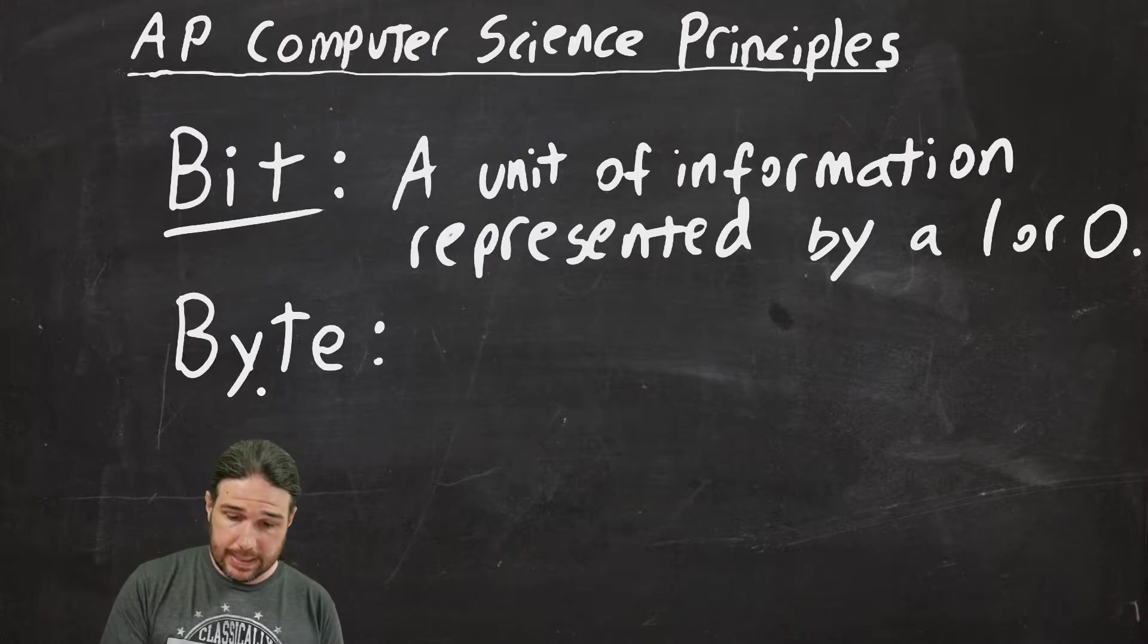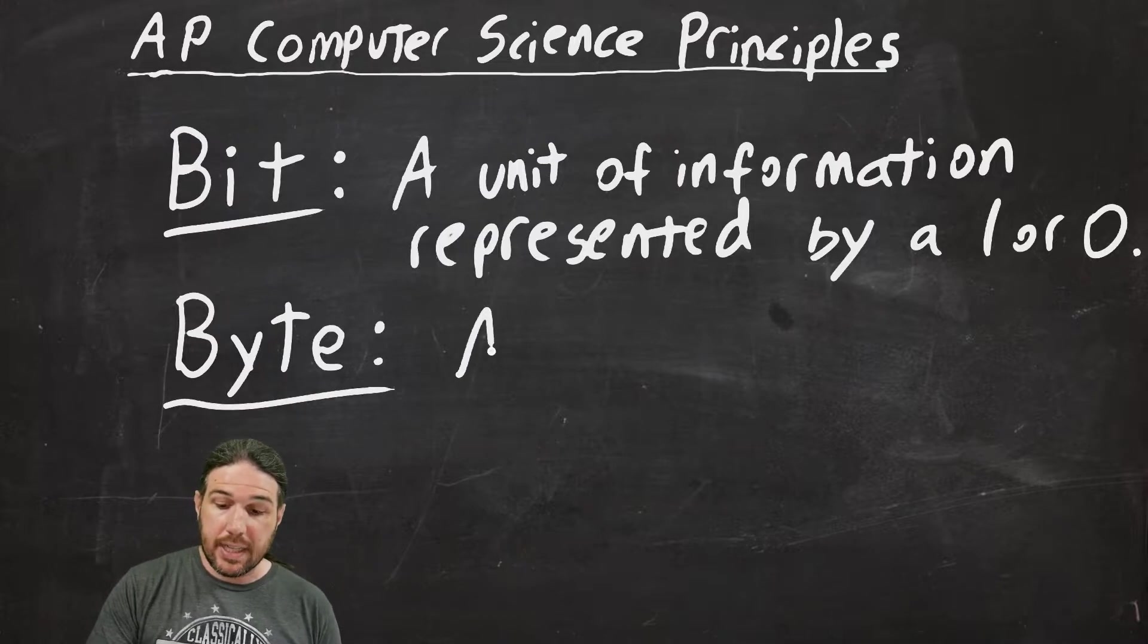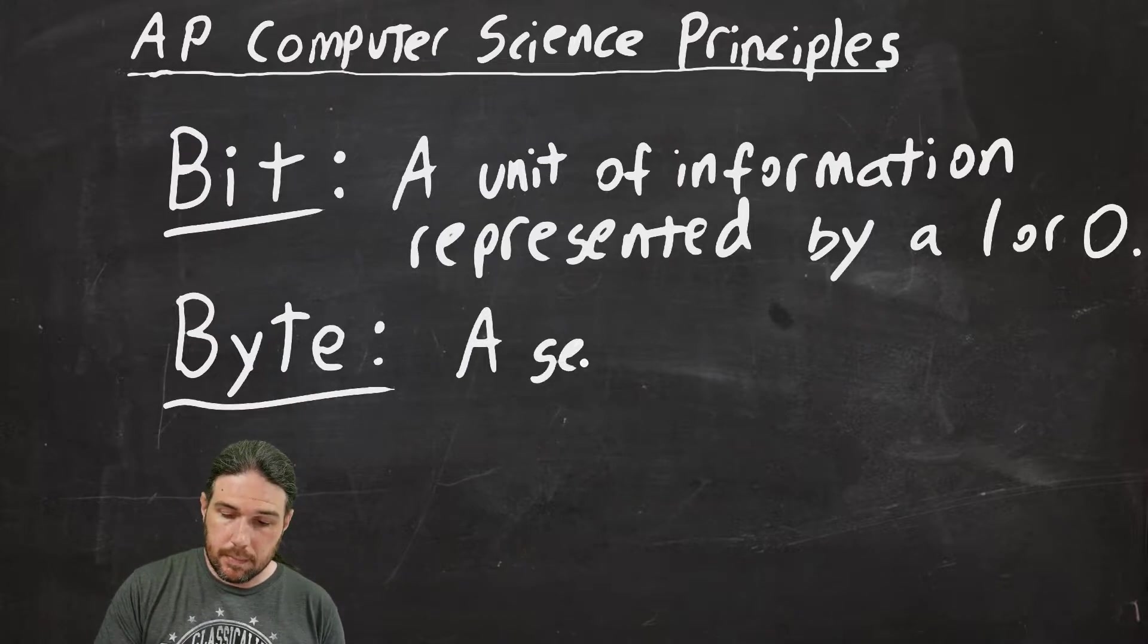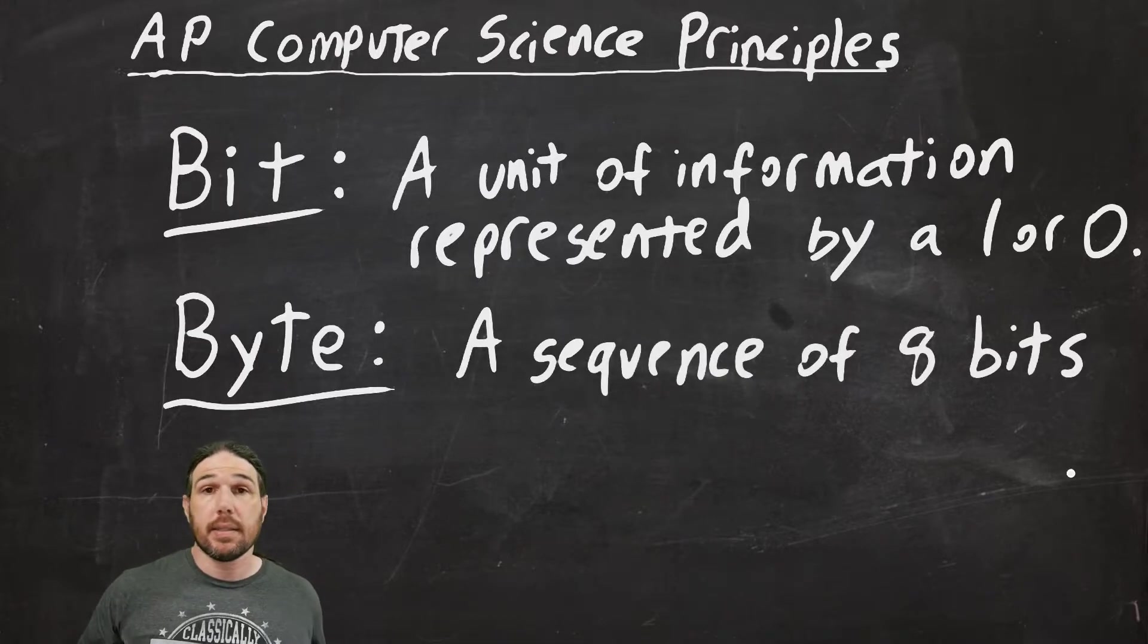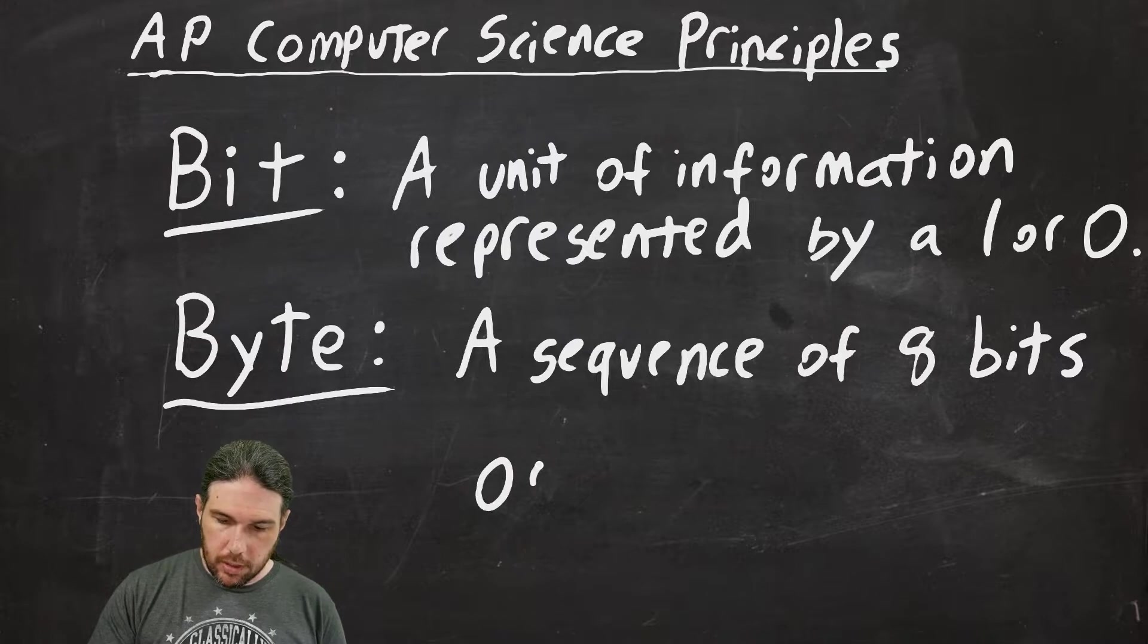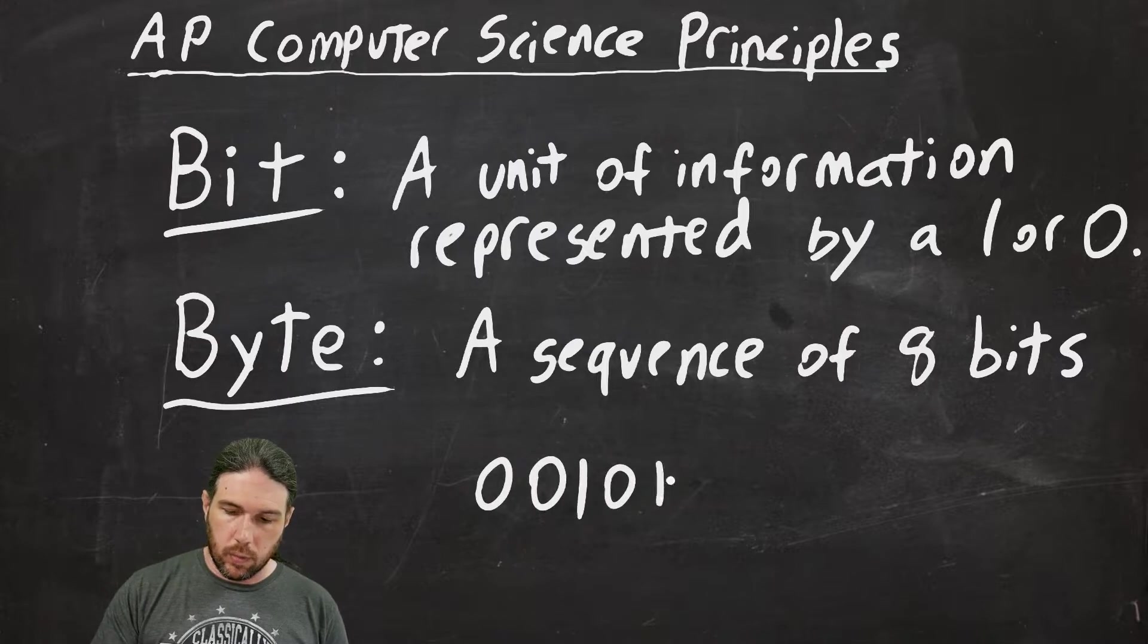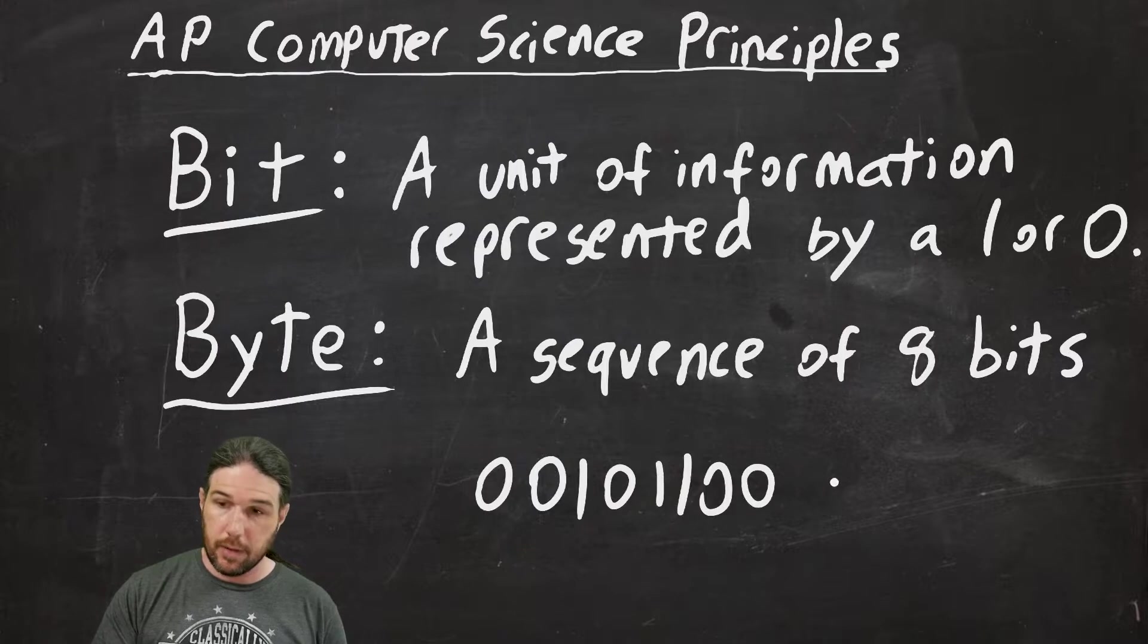A byte is a sequence of 8 bits. That's all a byte is. It's just 8 bits lined up in a row. So like 0, 0, 1, 0, 1, 1, 0, 0—1, 2, 3, 4, 5, 6, 7, 8. That is a byte.